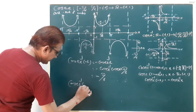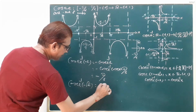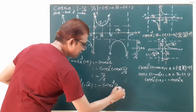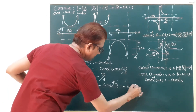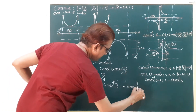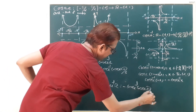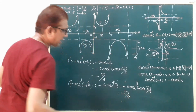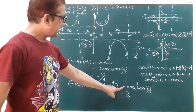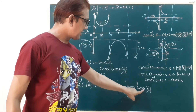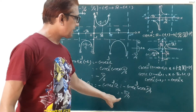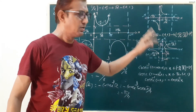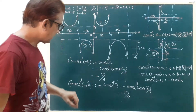Fifth: cosecant inverse of minus root 2. Take minus sign common: minus cosecant inverse of root 2. Then cosecant inverse of cosecant pi by 4, so the answer is minus pi by 4. Negative sign remains, cosecant and inverse cancel, answer is minus pi by 4, which belongs to the closed interval minus pi by 2 to pi by 2, minus {0}.